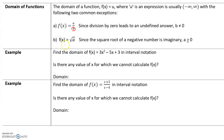If you have a function f(x) equals the square root of a, since the square root of a negative number is imaginary, the expression a can only have a value of 0 or higher. So a has to be greater than or equal to 0.